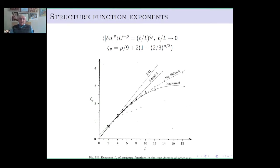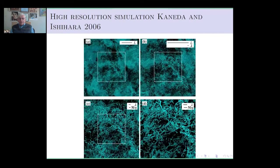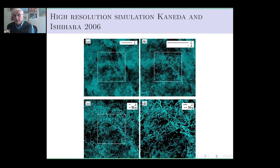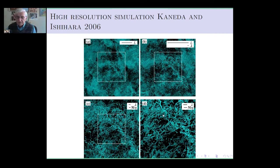If we look into fully developed turbulence we do see this kind of overlay of large structures and smaller structures. These are magnifications of structures — in particular, these are representations of vorticity intensity — and you can see there's a real filamentary structure here.